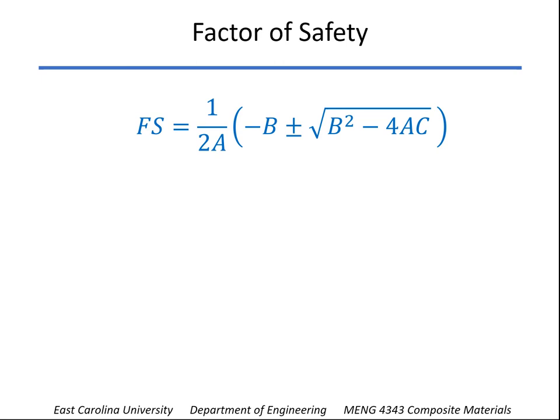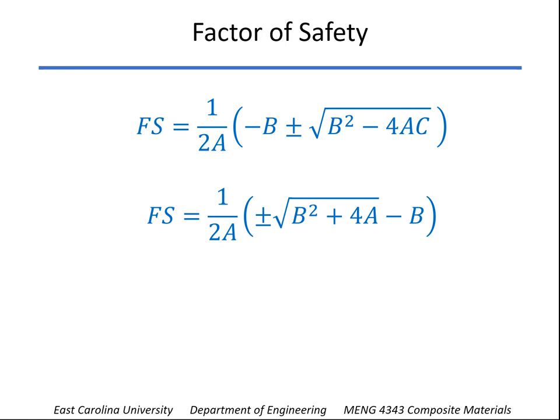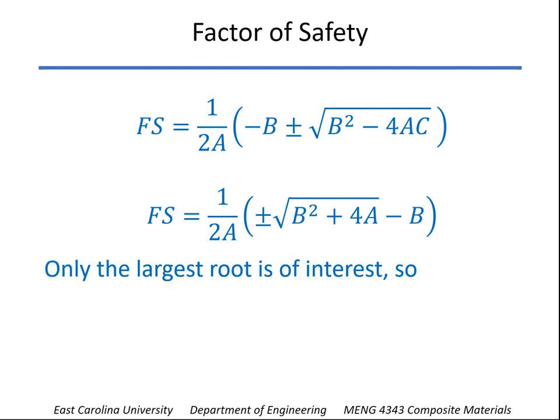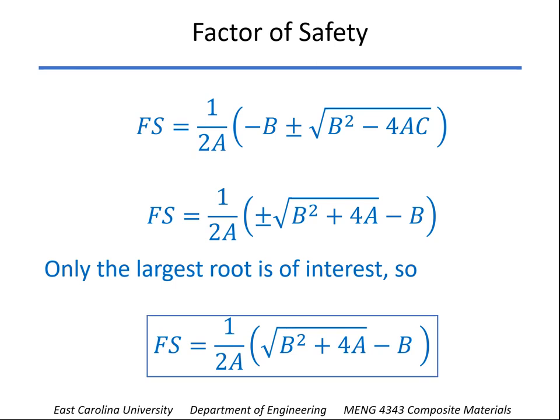Since C equals negative one, we can rearrange: minus 4AC becomes plus 4A, and we move negative B over to the other side. For a quadratic equation there are two possible solutions, but we're only interested in the larger root — that's the one that tells us the factor of safety. The negative root would be the factor of safety if all the loadings were reversed, but we're not interested in that. So taking just the larger of the roots gives us our equation for the factor of safety.